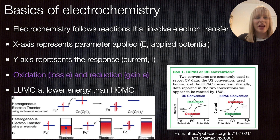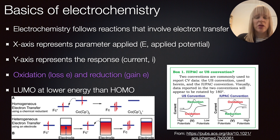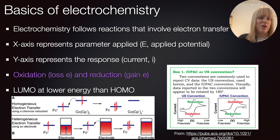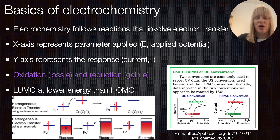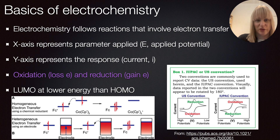Generally, electrochemistry follows reactions that involve electron transfer. This can be that you're working with an analyte that's electroactive, but it could also be that you have a redox mediator. Electrochemistry has many different techniques, and cyclic voltammetry is only one of them, but it's probably one of the most commonly used and it's kind of a standard technique. So if you wanted to know something about your system, you'd probably look at cyclic voltammetry first.